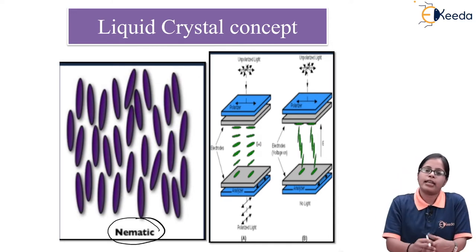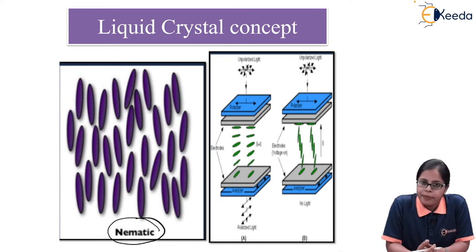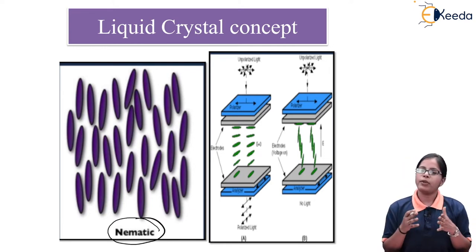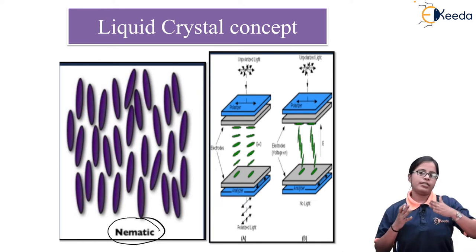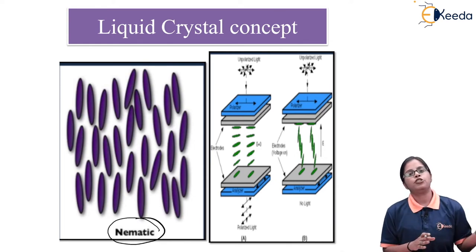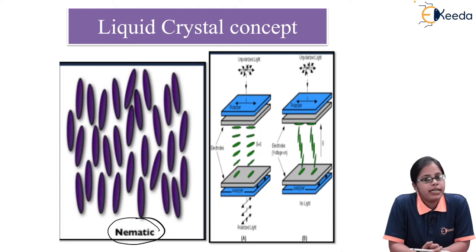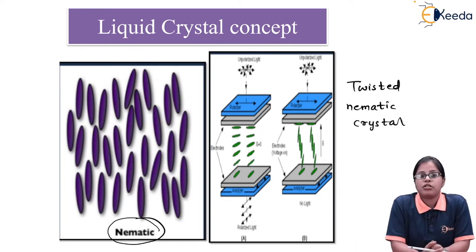Liquid crystal has the property of flowing as compared to liquid, but it has orientation as compared to crystals (solid). That is why we say liquid crystal is a phase of matter which lies between solid and liquid phase. When talking about the nematic phase of liquid crystal used in LCDs, we prefer the twisted nematic phase. The most popularly used crystals are twisted nematic crystals in the nematic phase.